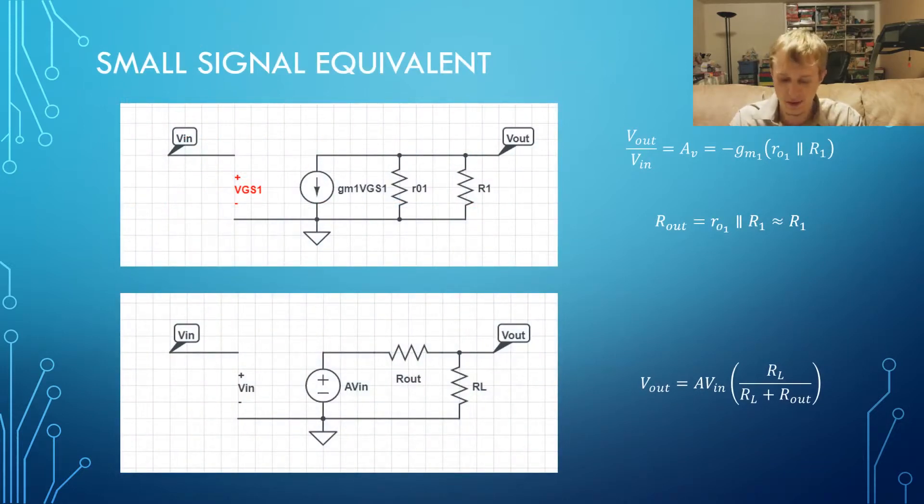Now let's look at the small signal equivalent of the system and the voltage gain of the system. Let's first look at the system without the second transistor. If we take the small signal equivalent of this, we end up with the circuit on the top and the two equations to the right of the figure.